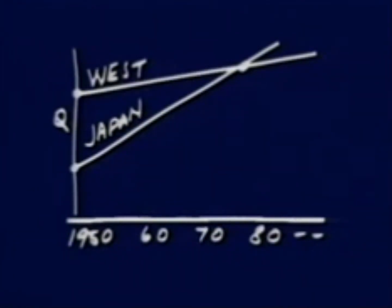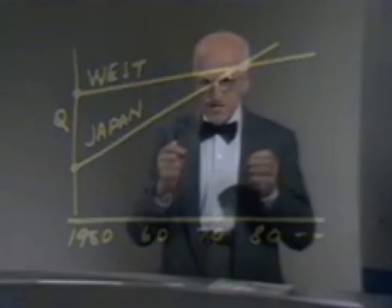That revolution has progressively made Japanese products saleable, then competitive, and now, in some product lines, superior in quality. These quality improvements were nearly always accompanied by cost reductions.